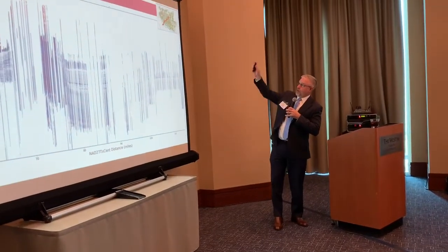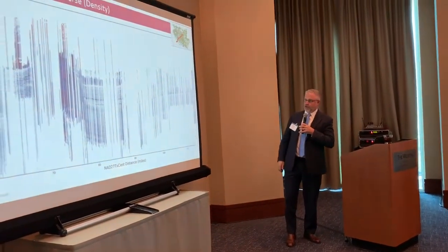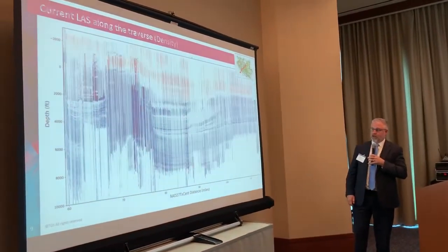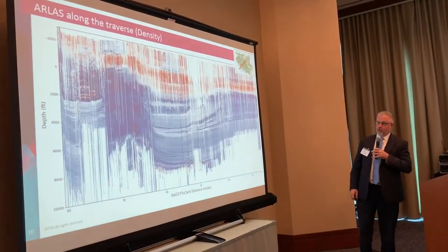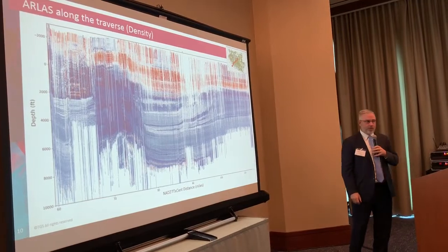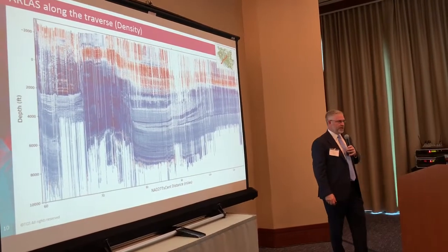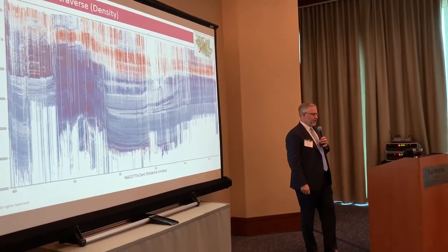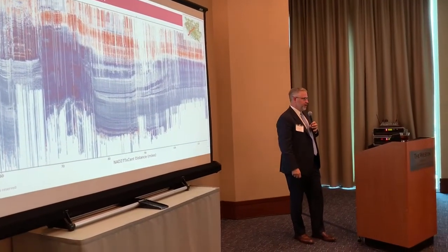Just one more example — the same cross section line used, looking at density. Again you can go from a rather coarse density to a rather dense set of density in that area.